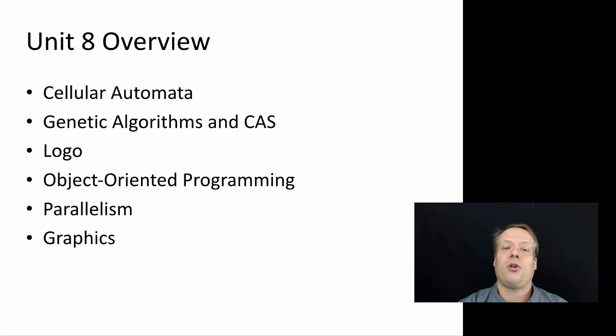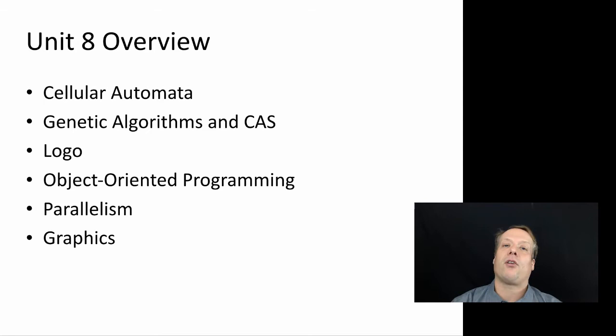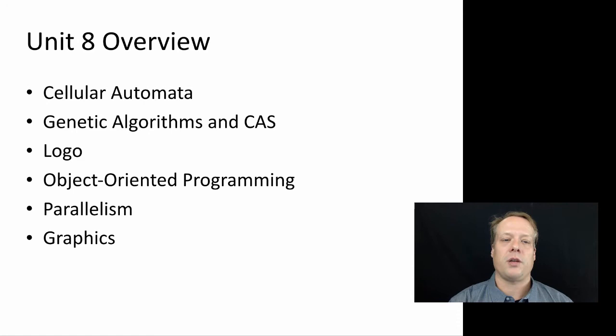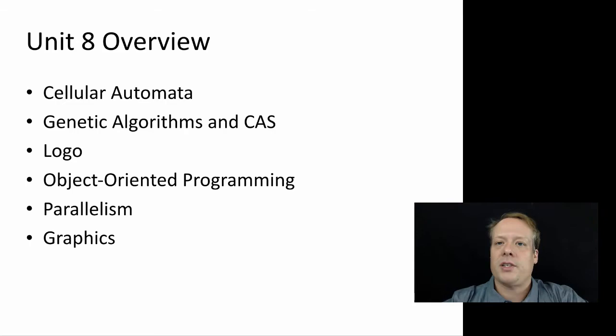You'll see multiple people who show up in different vignettes — the same people will be involved in different storylines as we try to weave these together. The storylines we're going to look at are: cellular automata, which we'll talk about today; genetic algorithms and complex adaptive systems; logo and some of the work done in that space; object-oriented programming; data and computational parallelism — the idea of having parallel objects doing things simultaneously; and computational graphics and how that's affected agent-based modeling. We do not claim this is a comprehensive history — it's in some ways a personal history emphasizing the aspects we think are most relevant.